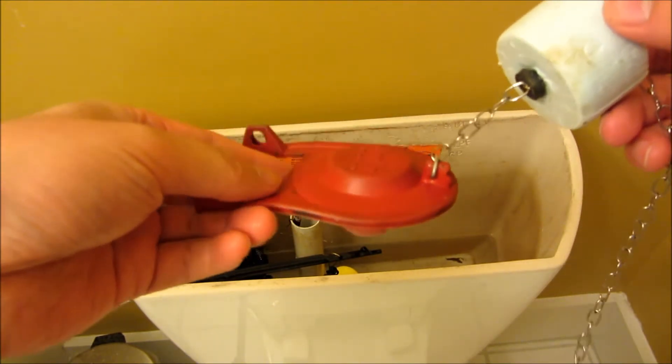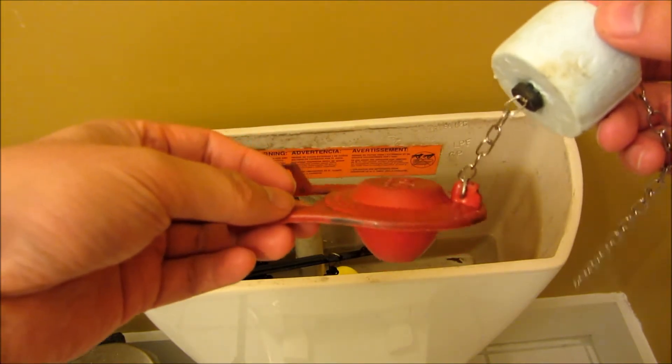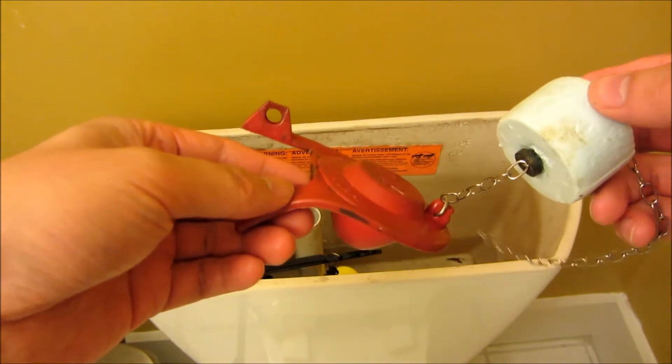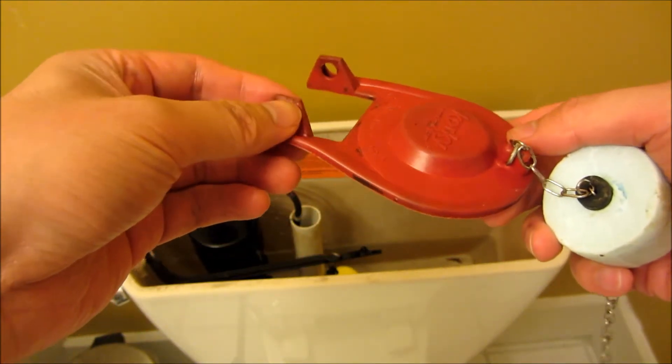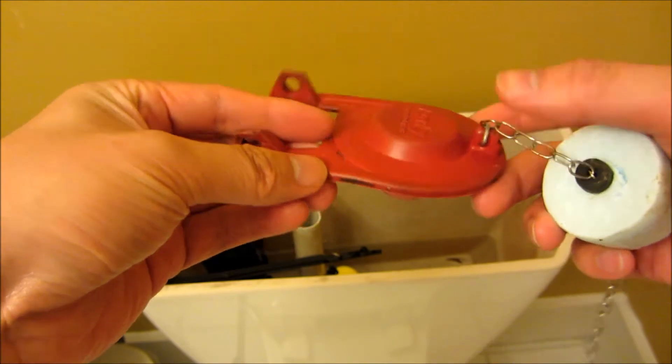The reason why you have to adjust this float is there might be instances where the flapper closes too quickly, in which case the water entering the bowl is insufficient. So there's too little water entering the bowl, meaning this thing is closing too fast.